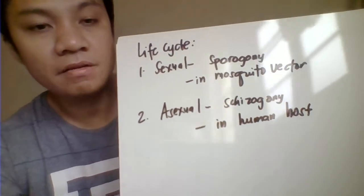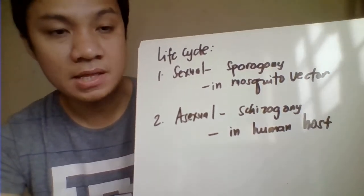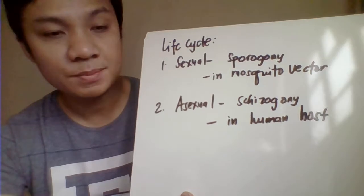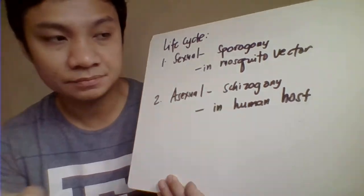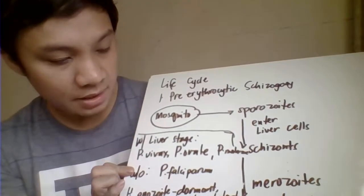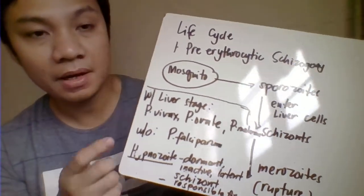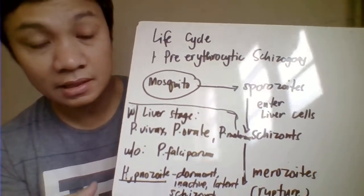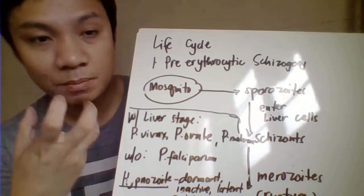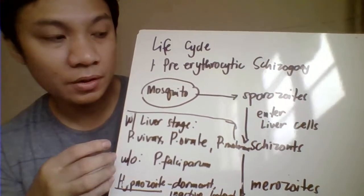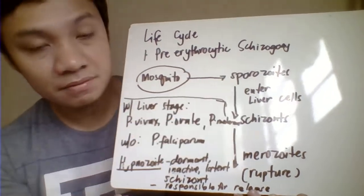The life cycle of the parasite is divided into sexual reproduction — the sexual stage occurring in the Anopheles mosquito, called sporogony — and the asexual stage occurring in the human host, called schizogony. We start the life cycle with pre-erythrocytic schizogony, meaning before it enters the RBC. The female Anopheles mosquito, through its proboscis and saliva, contains sporozoites, which is the infective stage for humans.